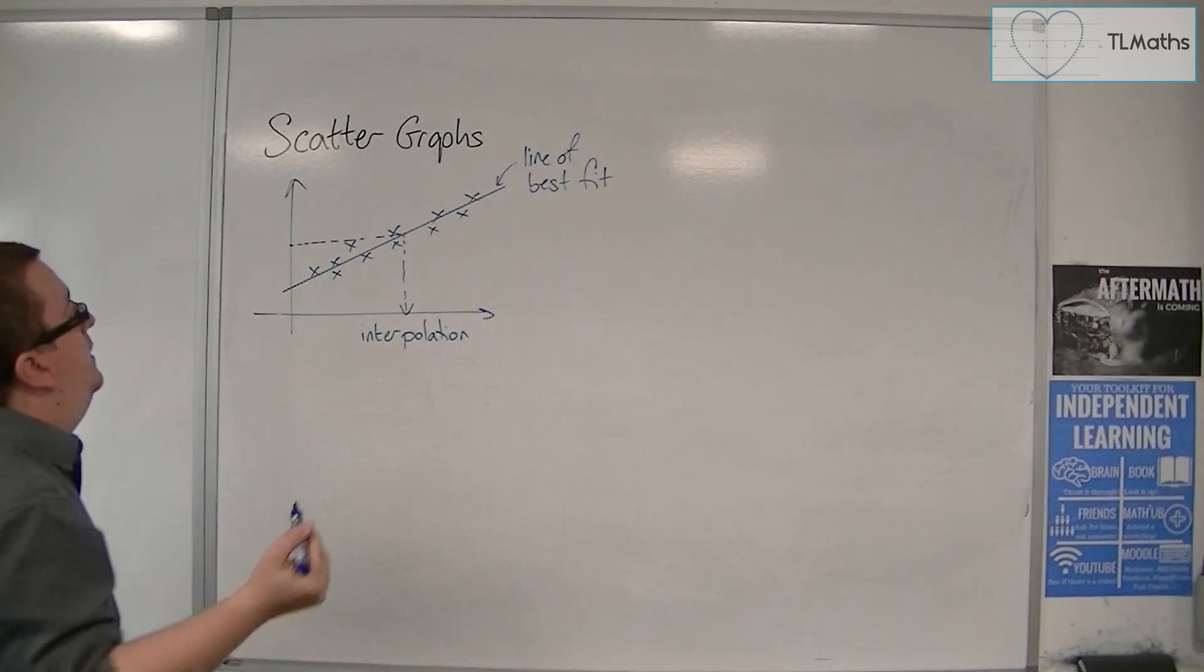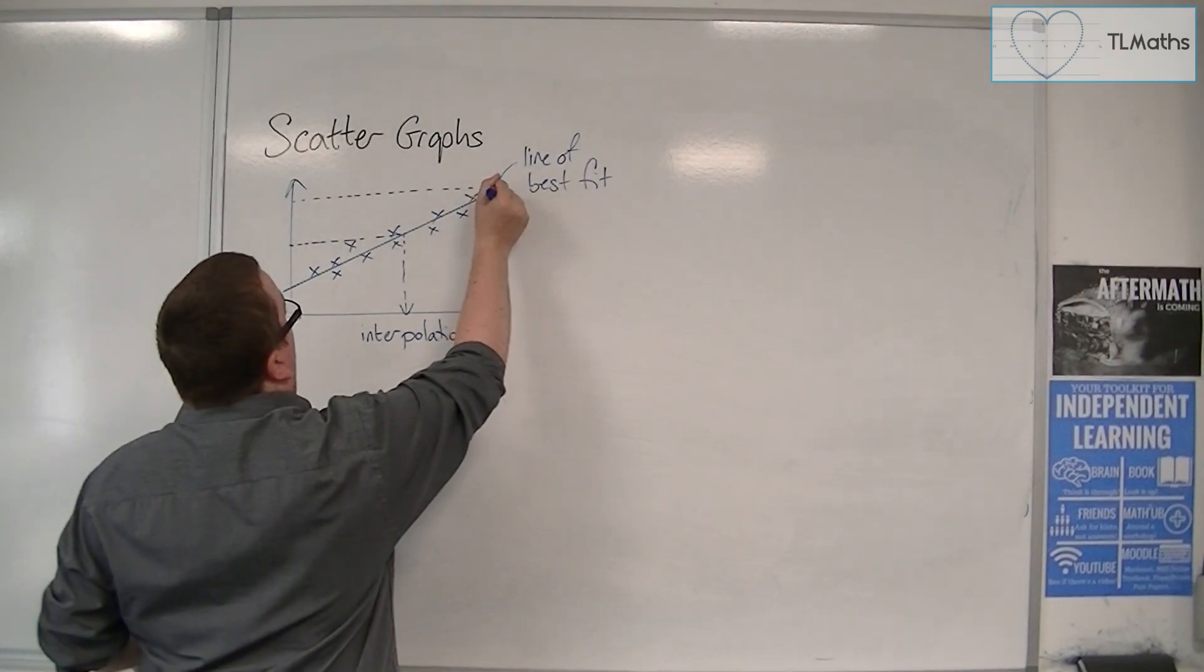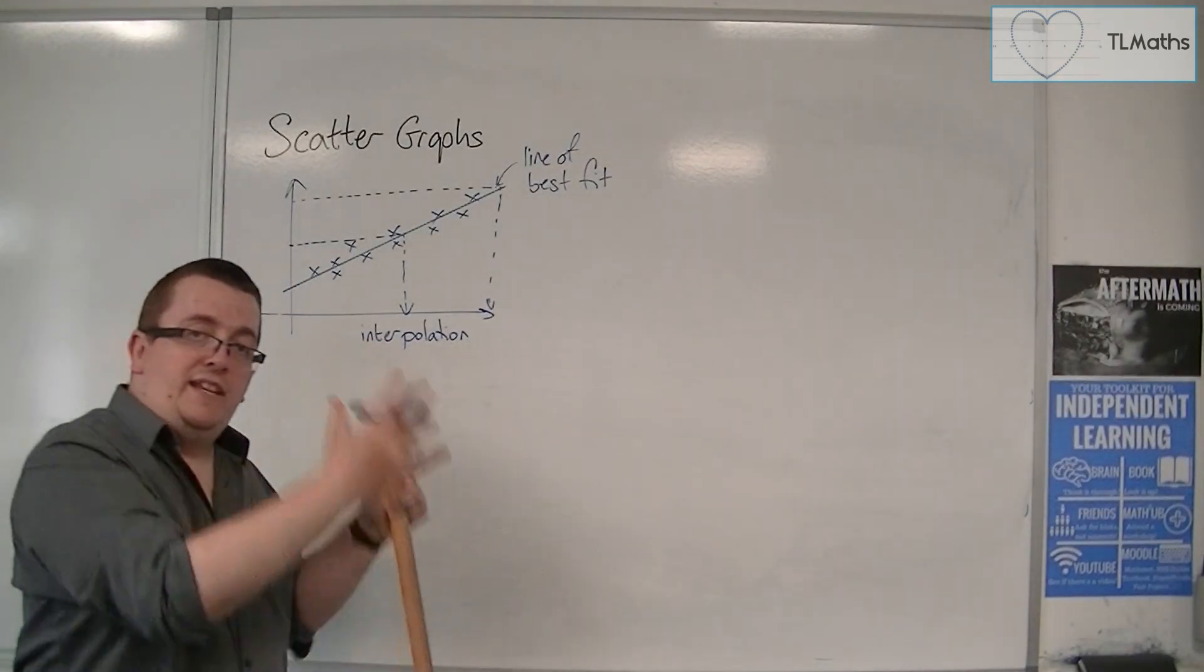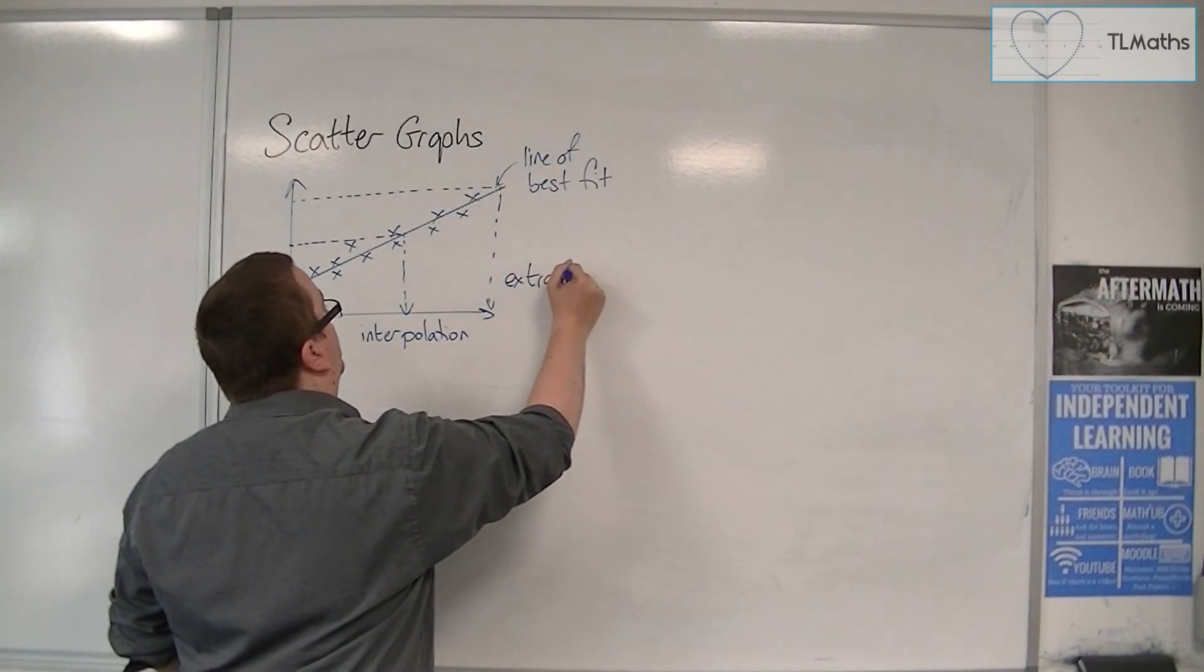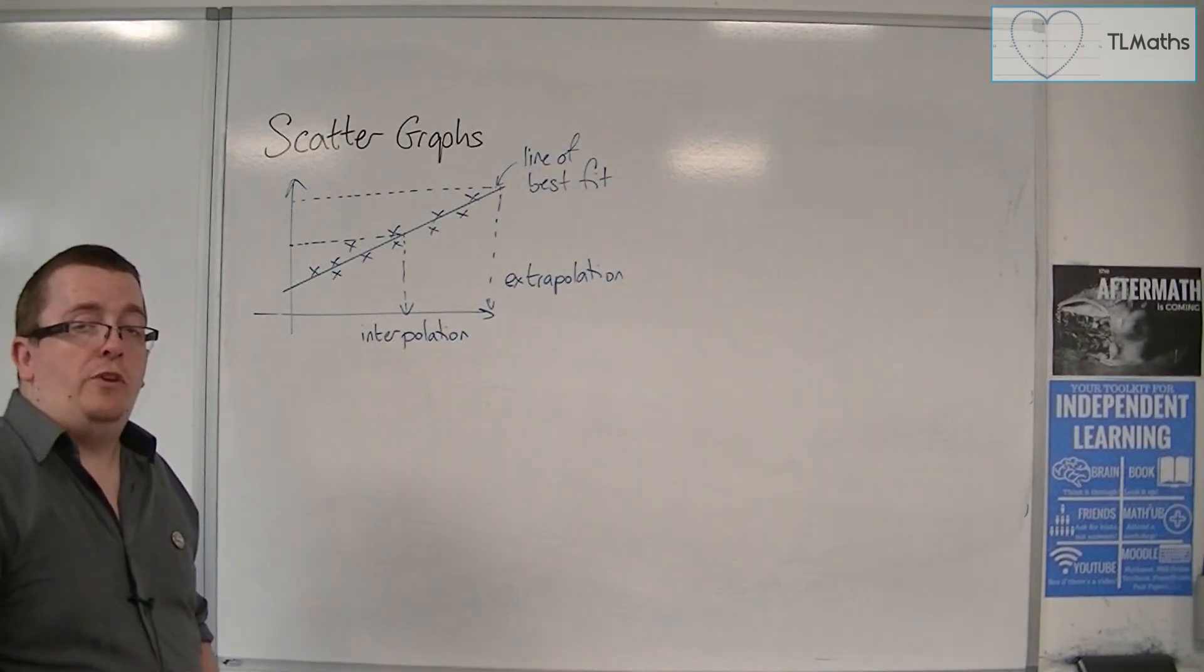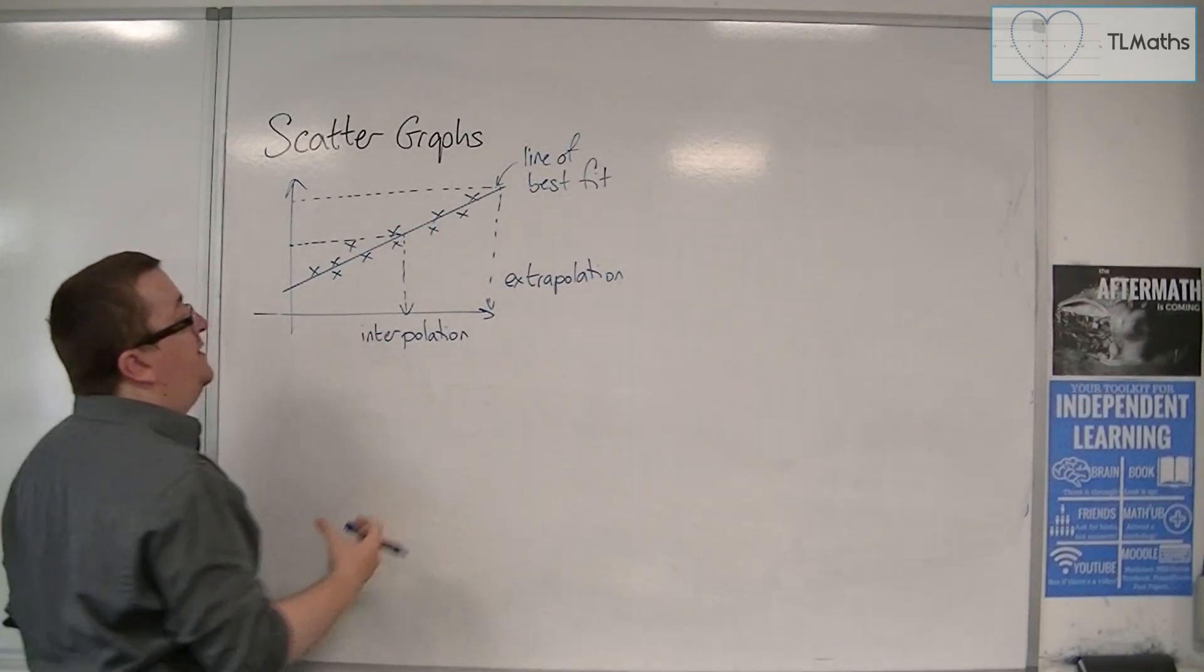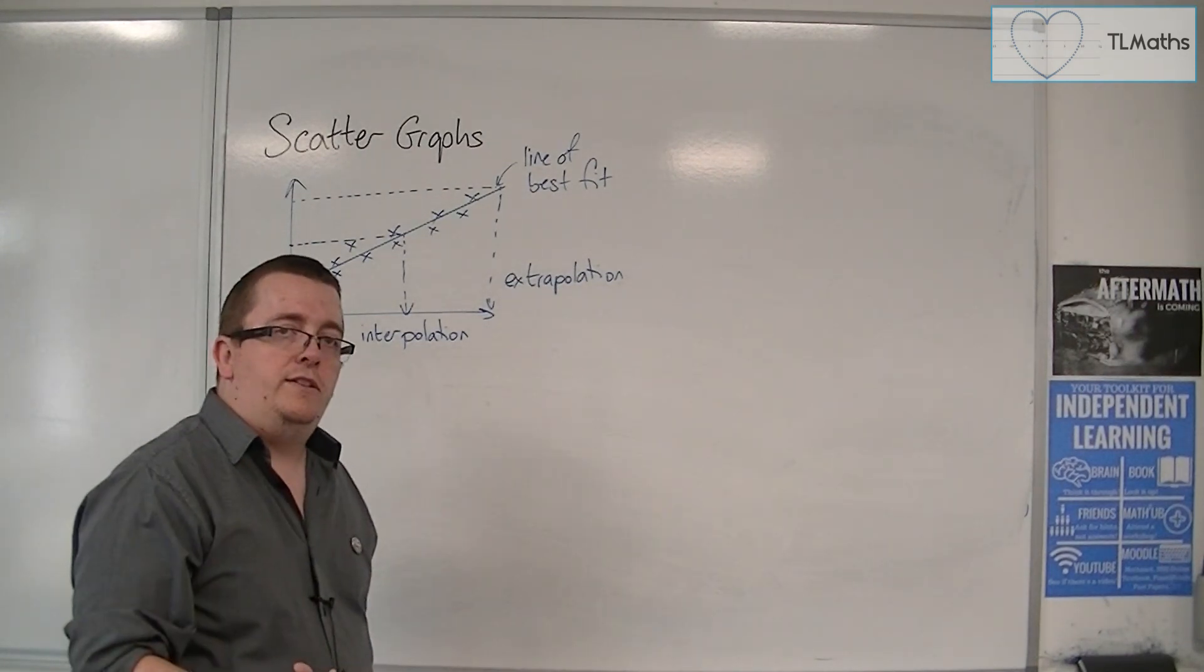If, however, you're looking at data that is beyond where you've recorded any data, if you're looking outside of that data set that you recorded, that's known as extrapolation. And in general, interpolation can be trusted, but extrapolation can't. Because it's outside of the set of data, you can't be sure that it is correct in any way.